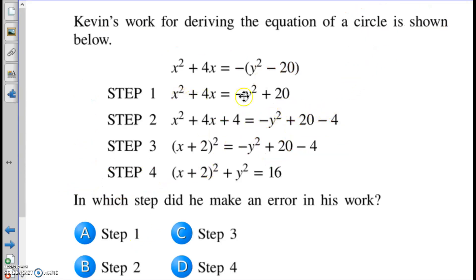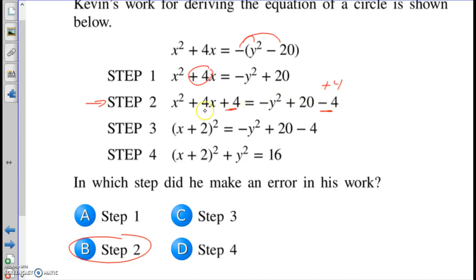Kevin's work for deriving the equation of a circle is shown below. So let's see what he's doing here. So the first thing it looks like he did is he distributed the negative sign there. And then he's completing the square, the process of completing the square. He took the b term, divided it by two, and squared it. That's where this plus four comes. Here's an issue. Because when you complete the square, the number you add, you add it to both sides. You don't minus it to both sides. This should be a plus four. So step two, there's a mistake. And then he factors it correctly into parenthesis squared. This side he did nothing with. And then he brought the y squared over and combined like terms there. So there are no mistakes here. But which step did it make an error in? As we saw that happen in step two, we should be adding four on both sides, not adding four on one side, subtracting four on the other.